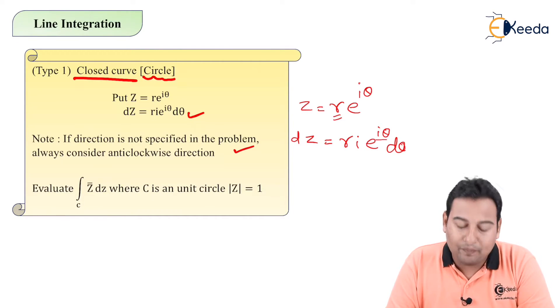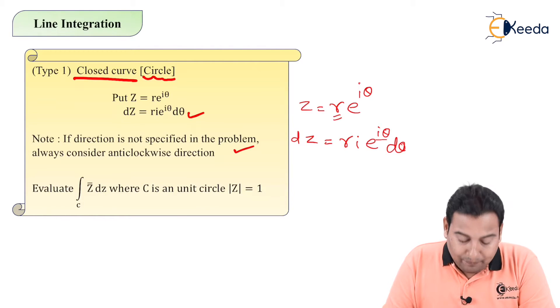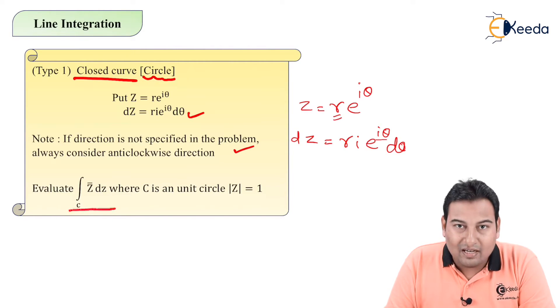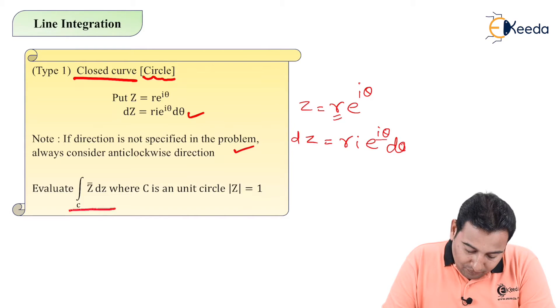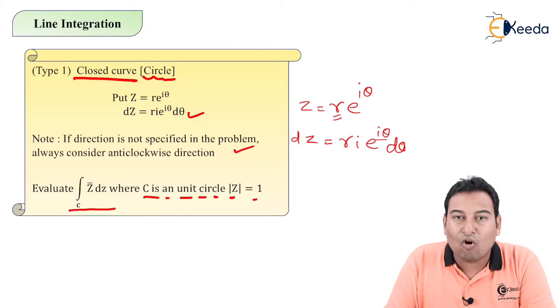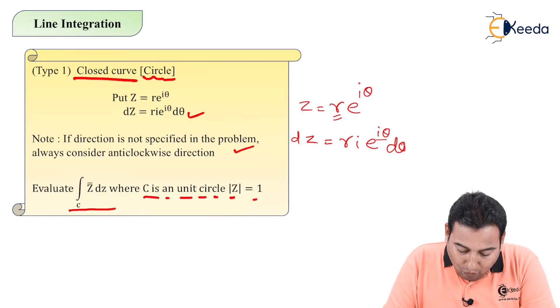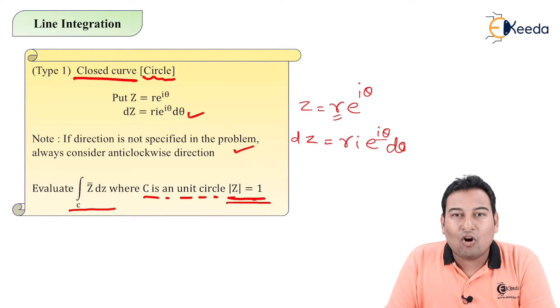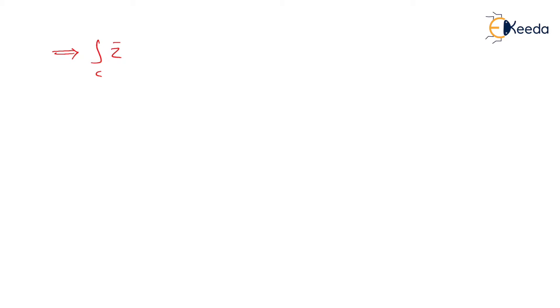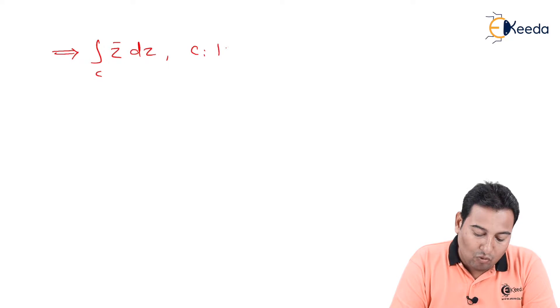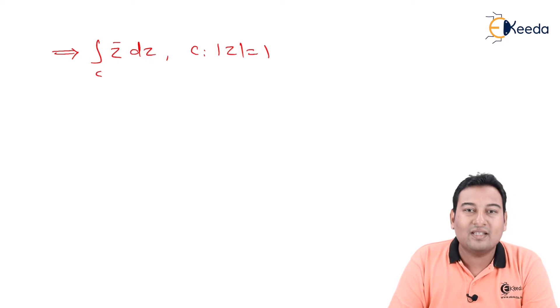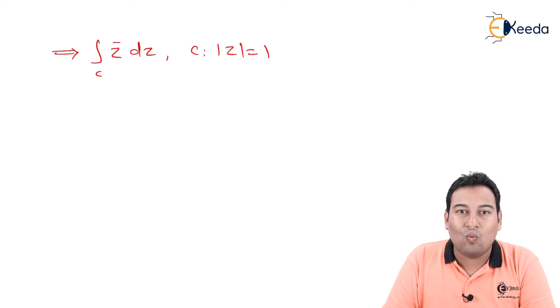Let us start with the first problem: evaluate the integration over C of z-bar dz, where C is the unit circle, mod z equals 1. We have already discussed that mod z equals a represents a circle with radius a, so in this case C is the circle with radius 1.